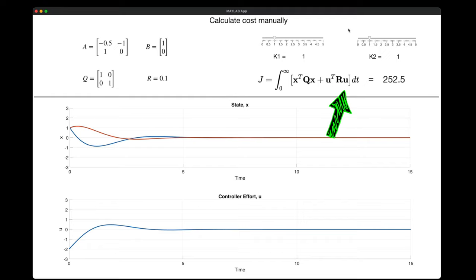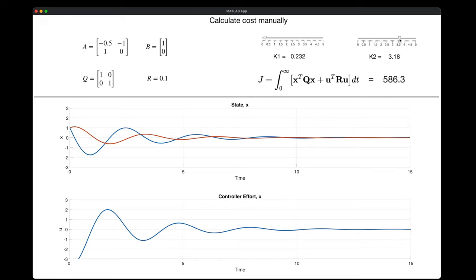Now I can just pick different sets of gains, which changes the behavior of the system, which then changes the cost. So with brute force, we just do this for every possible gain combination and then just find the lowest cost.